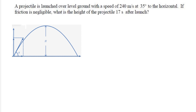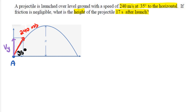In this next problem, a projectile is launched over level ground at 240 meters per second at 35 degrees to the horizontal. Ignoring friction, we want to find the height of the projectile 17 seconds after launch. We need the vertical velocity component Vy. Starting at A and 17 seconds later the projectile is at point B, moving in the upward direction from A to B.